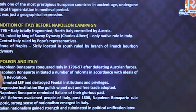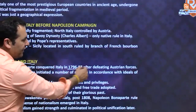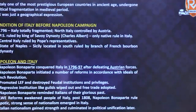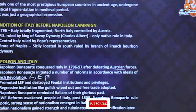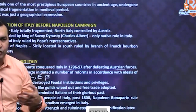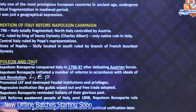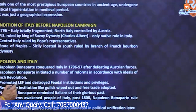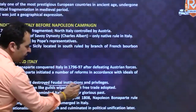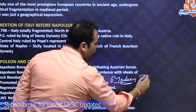Napoleon and Italy: when Napoleon conquered Italy in 1796–97 after defeating Austrian forces, he initiated a number of reforms in accordance with the ideals of the French Revolution — liberty, equality, and fraternity. He promoted these ideals and destroyed feudal institutions and privileges, making the process of modern Italy possible. The regressive institutions like guilds were wiped out and free trade was adopted, beginning Italy's economic development.